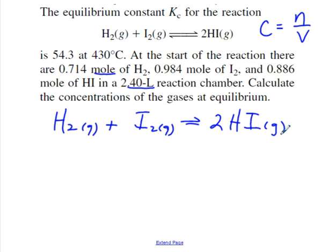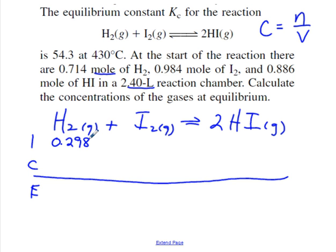Since those were placed into the vessel, I'm going to set up an ICE table because they represent the initial concentrations. So there was 0.298 molarity of H2 hydrogen. That's the 0.714 moles divided by 2.40 liters. Doing the same thing for iodine we get 0.410 molarity, and for the HI there was 0.369 molarity.